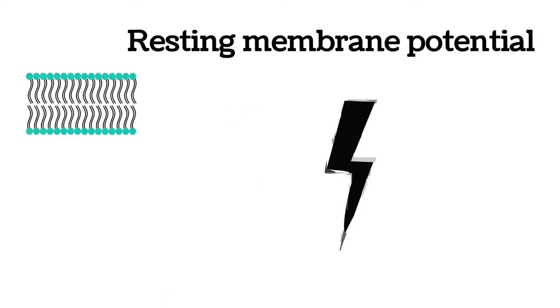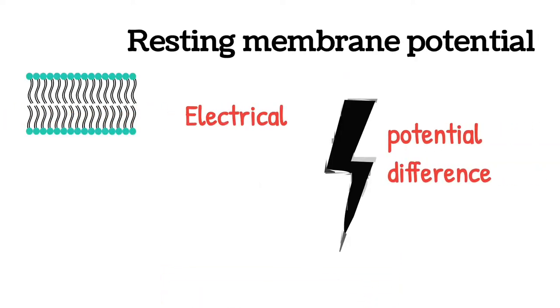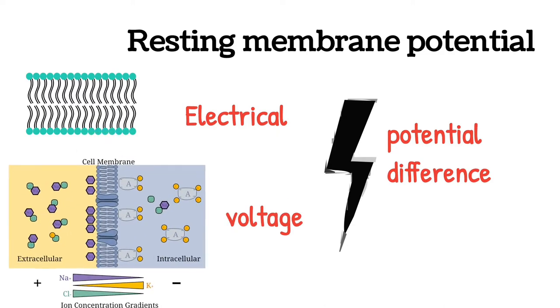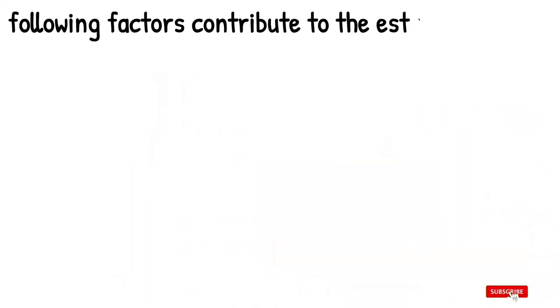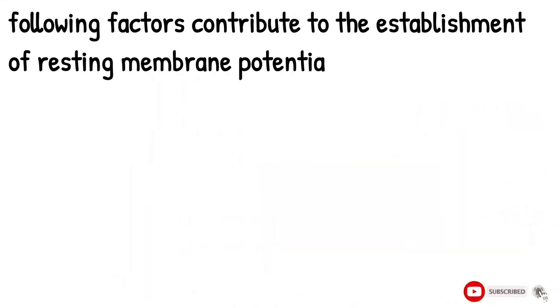Resting membrane potential is defined as the electrical potential difference, voltage, across the cell membrane between inside and outside of the cell under resting condition.